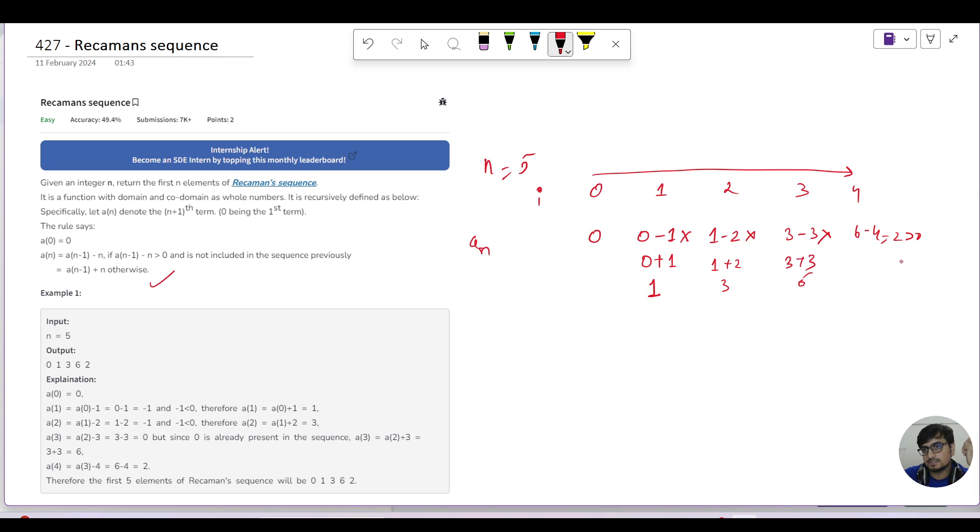Similarly, for the next number we have 6 minus 4, which is 2, which is greater than zero. So I will replace the number with 2.